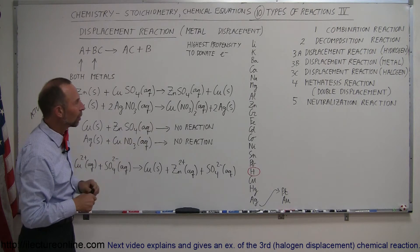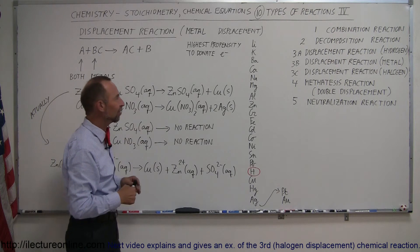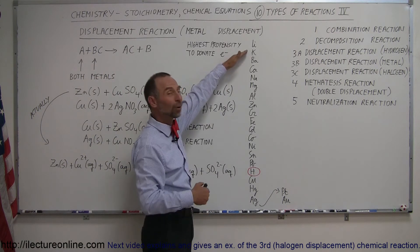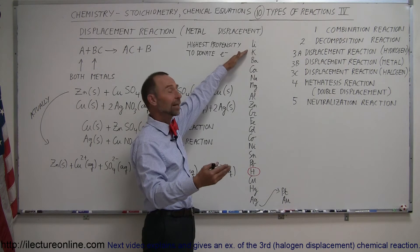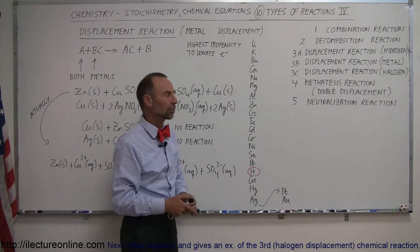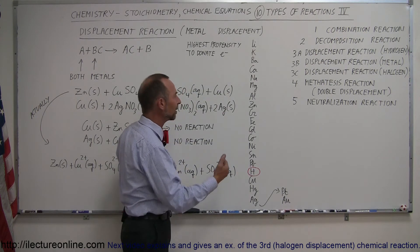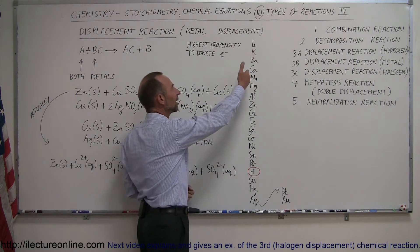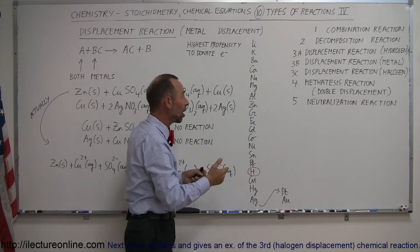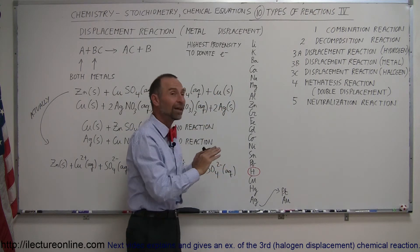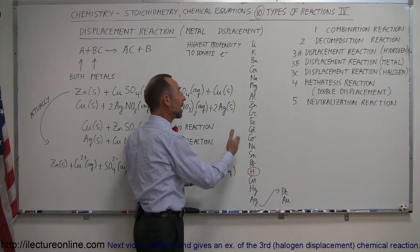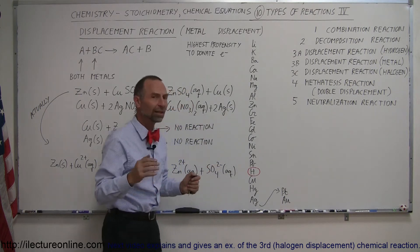Here we have what's called the activity series. Things near the top are more likely to donate electrons; things near the bottom are less likely to donate electrons. So if a metal that's higher up on the list comes along, it will displace a metal already in the aqueous solution and bond to the ion that's lower on the list.